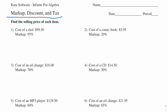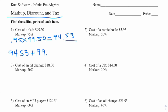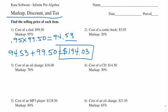So we're going to take 95% of the original price. In math, 'of' means multiplication, so 0.95 times 99.50. We end up getting 94.53 — I'm rounding from 94.525. We take that 94.53 and add it to the original amount of 99.50, and we end up getting $194.03, and that's our final answer.